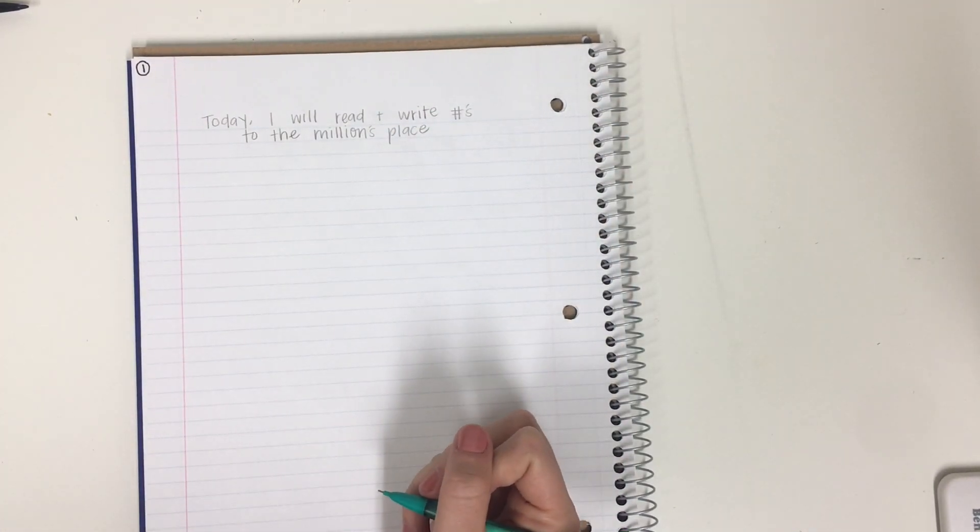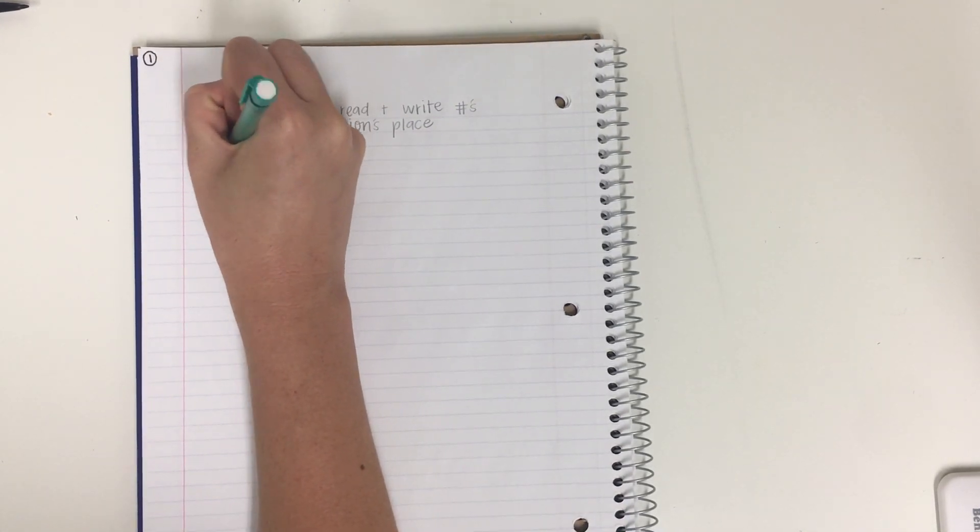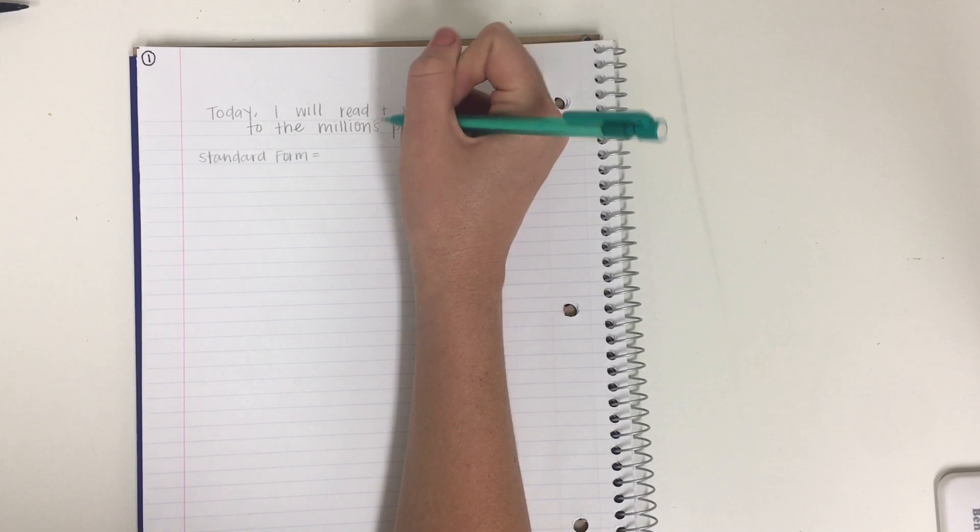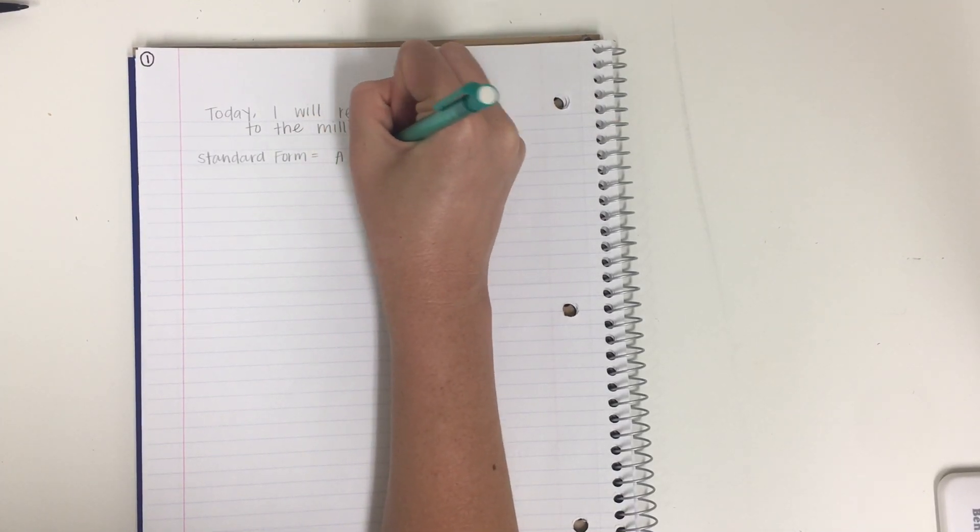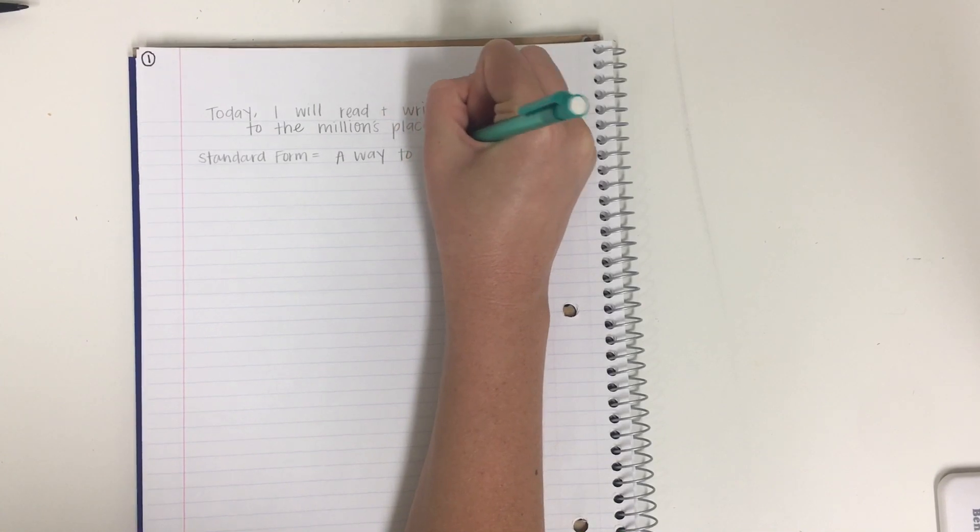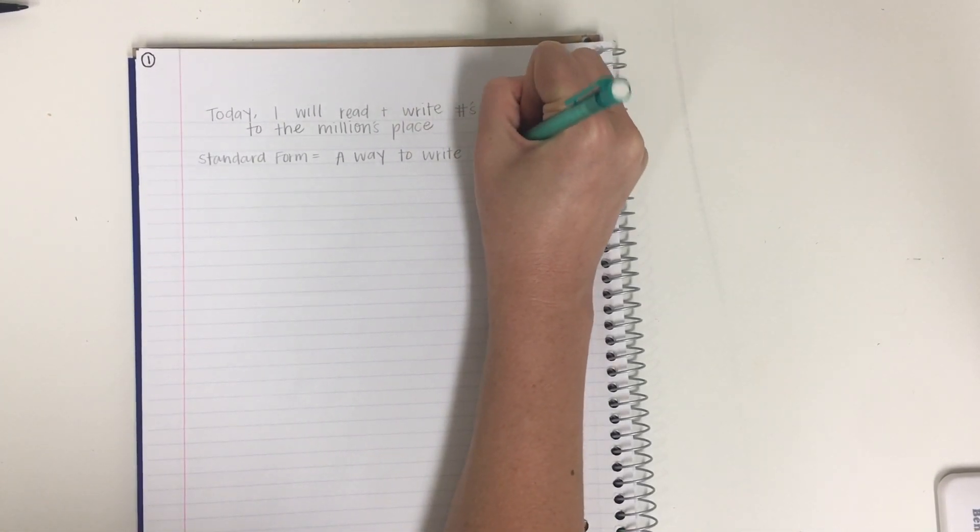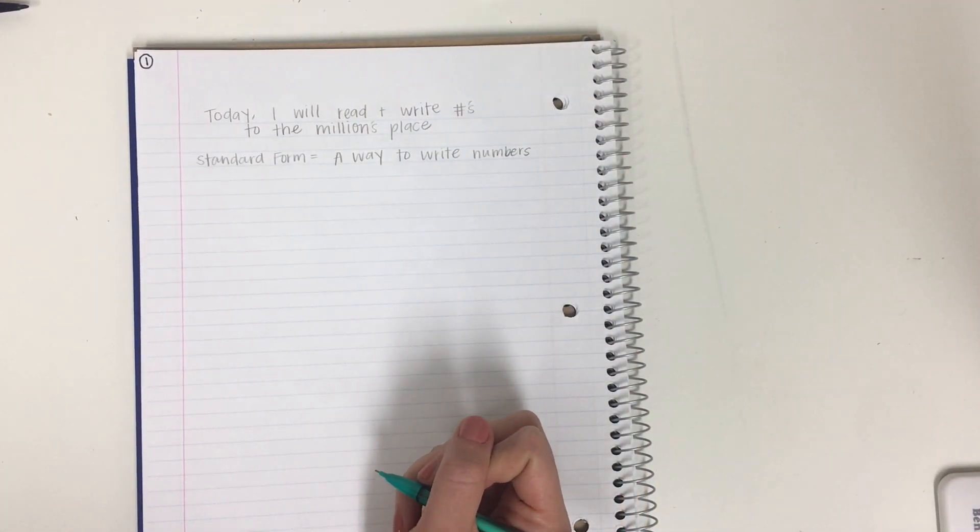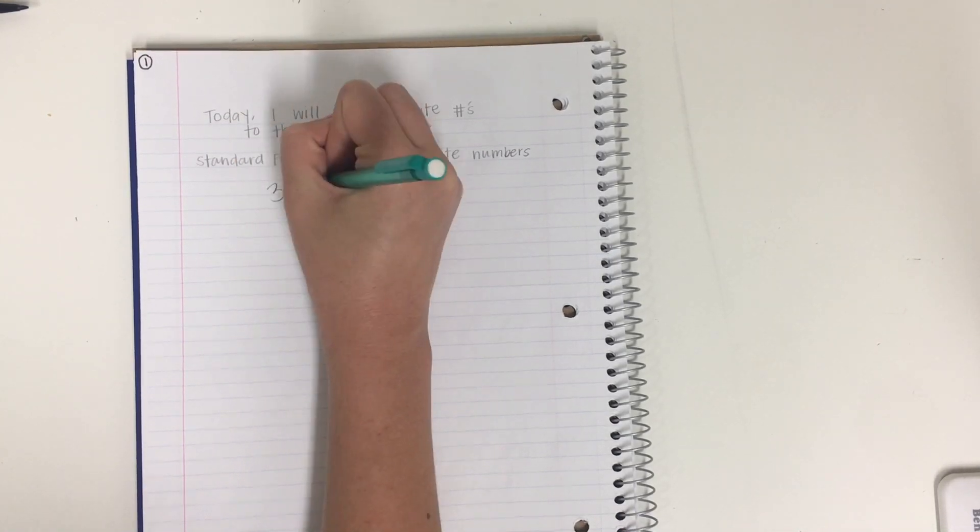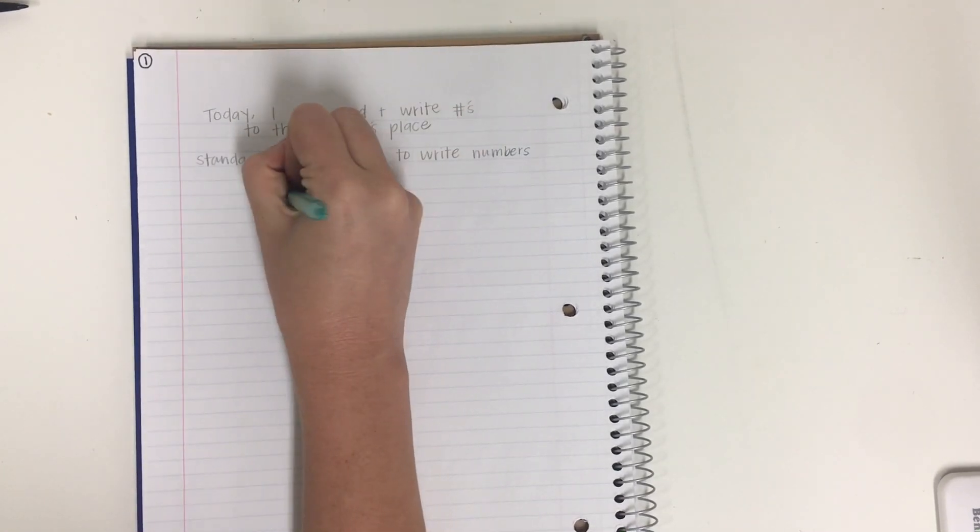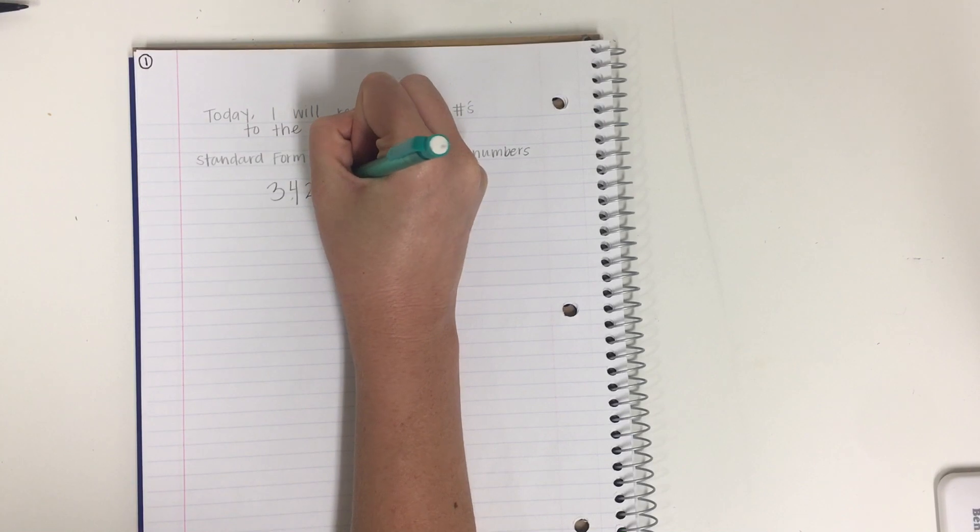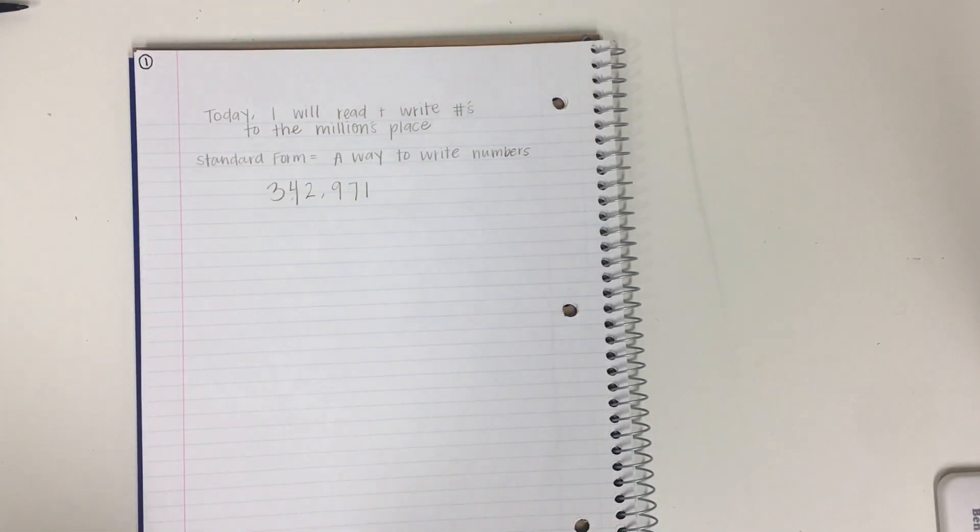Okay, so I want to review really quickly standard form. Now standard form, let's define it. Standard form equals a way to write numbers. So I want to review how we read a number to start. So let's say our number is... Okay, so here is our number.